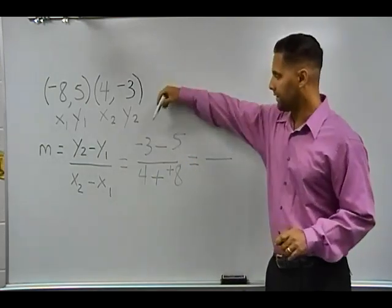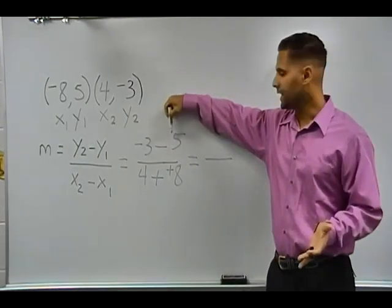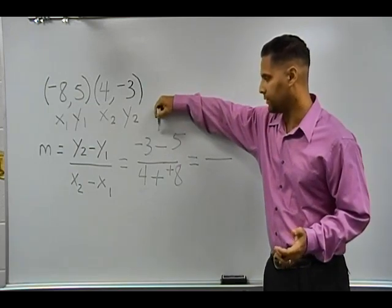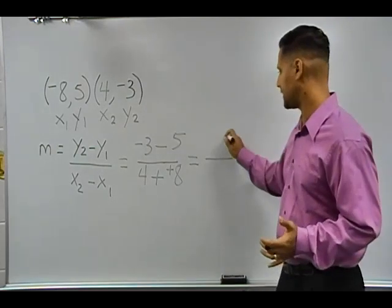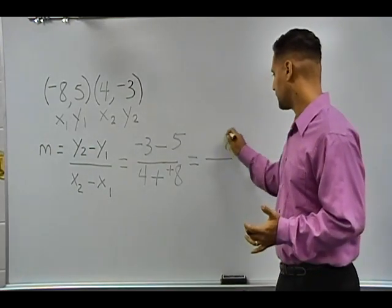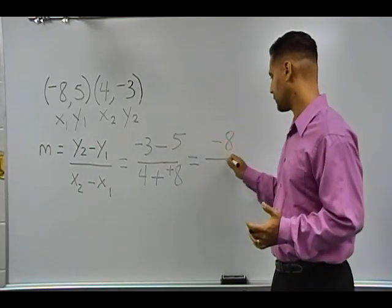Now for the numerator, we have negative 3 minus 5. Essentially, these are both negative numbers, and when you have the same sign, you should find the sum. So 3 plus 5 is 8, but because the signs are the same, we must retain or keep the sign.